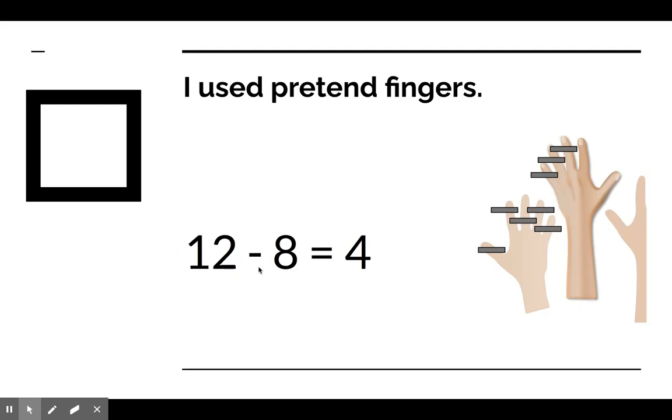So, he had 12 bouncy balls. He took 8 of them away and gave them to Pete. And now, he has 4 left for himself. If you use the strategy of using pretend fingers, check. That's a great strategy. Let's look at another one.